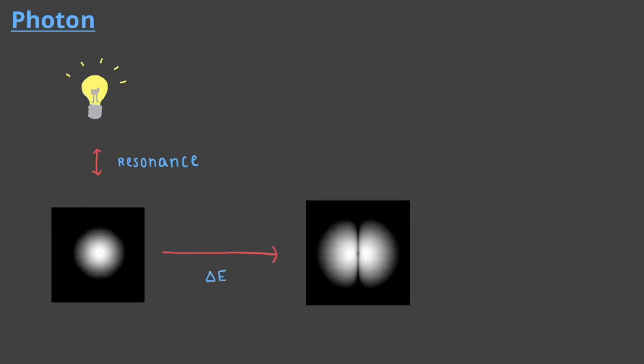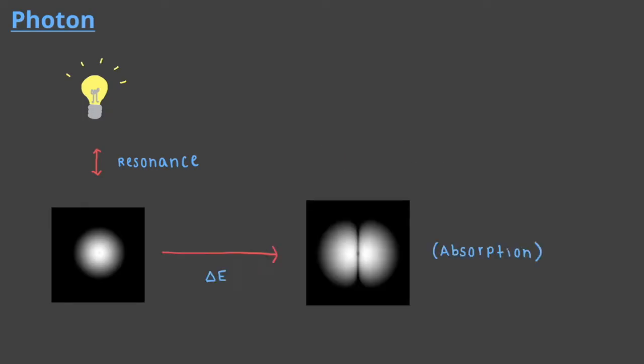When light transfers energy to matter, or in other terms when absorption occurs, there is an exchange of energy going on over the course of many oscillations of the electric field of light.